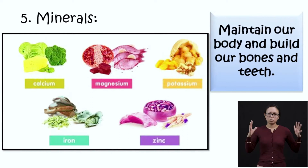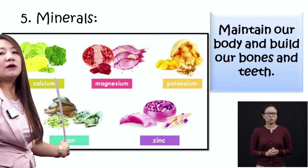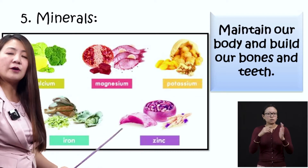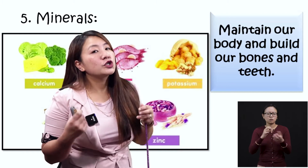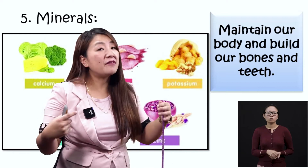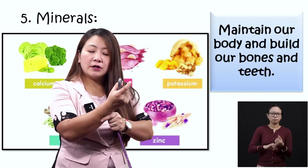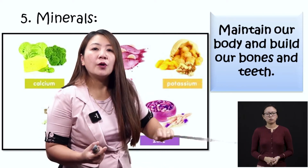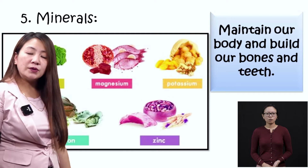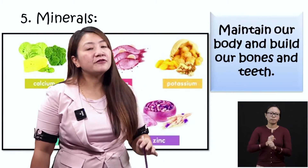Then next we have minerals. They are required by your body in very small quantities — calcium, magnesium, potassium, zinc, iron — all these are minerals. They are required by our body for strong bones and teeth. In order for our bones and teeth to be strong, we need to have minerals. They maintain our body and build our bones and teeth.